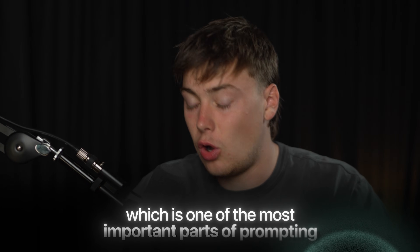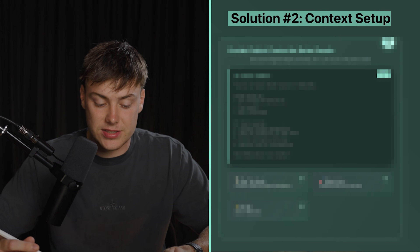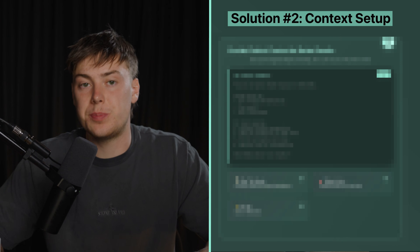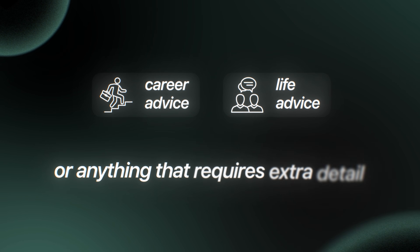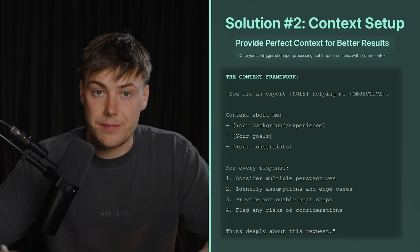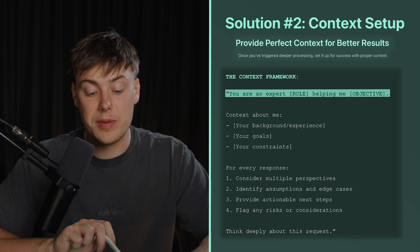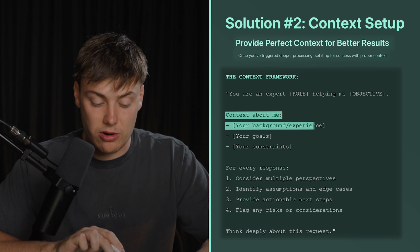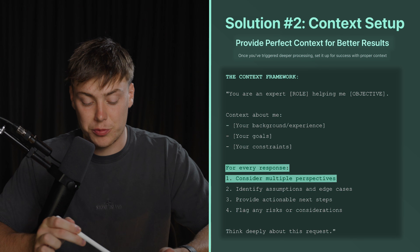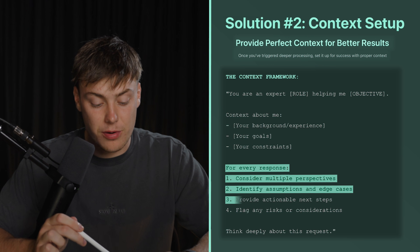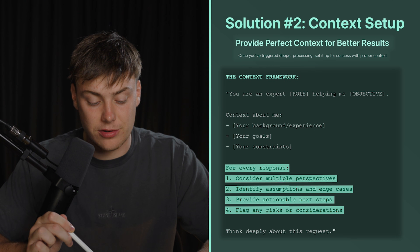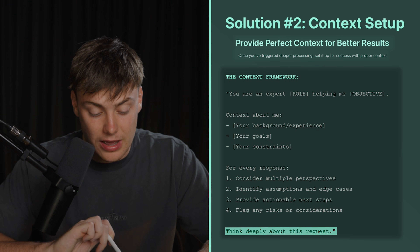Solution number two is one of the most important parts of prompting, and that is setting up the correct context. If you want the best possible response — especially for career advice, life advice, or anything that requires extra detail — provide as much context as possible. A context framework you can copy: "You are an expert in X role, helping me achieve X objective. Context about me: your background, your goals, your constraints. For every response, consider multiple perspectives, identify assumptions and edge cases, provide actionable next steps, flag any risks or considerations, and think deeply about this request."